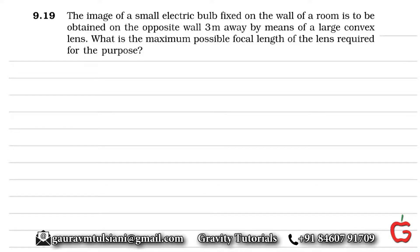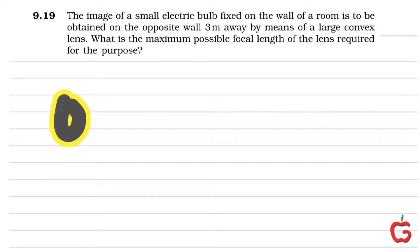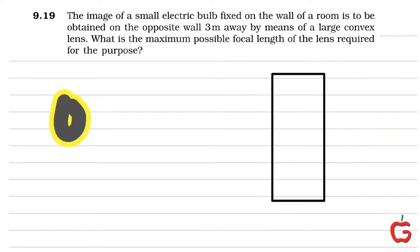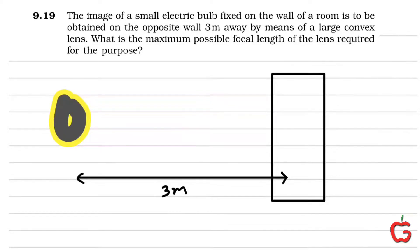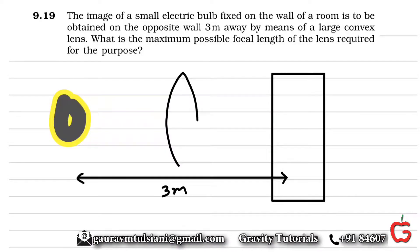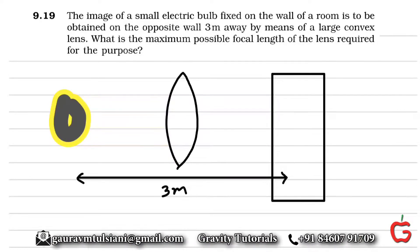The image of a small electric bulb fixed on the wall of a room is to be obtained on the opposite wall three meters away by means of a large convex lens. So we have a bulb here, and the image of this bulb is to be obtained on a screen three meters away. The distance between these is three meters and we are going to use a convex lens for this purpose. What is the maximum possible focal length of the lens required?